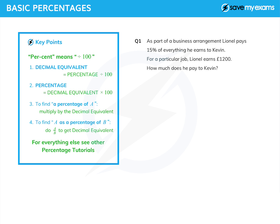Question one: as part of a business arrangement, Lionel pays 15% of everything he earns to Kevin. For a particular job, Lionel earns £1200. How much does he pay to Kevin? We're trying to find 15% of £1200, and we're going to use the decimal equivalent. The decimal equivalent of 15% is 15 over 100, in other words 0.15. 'Of' always means times, so 0.15 times 1200 gives us £180.